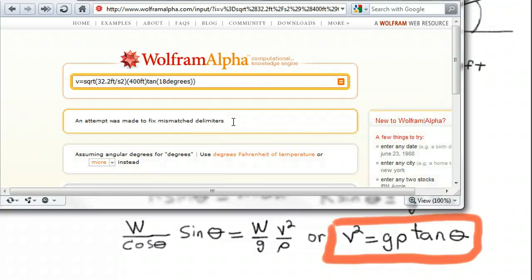Oh, it looks like I made an error here. It says an attempt was made to fix mismatch for the limiters. I think that means my parentheses are screwed up. So let me try and fix that. Okay, here's the problem. I need to put the parentheses around the entire value I want the square root around. And also around each individual value in there. So we've got g ρ and then the tan θ. So there's the tan θ. And you think I need an extra one. Yeah, right here at the end. That was my error message. Let's try this again.